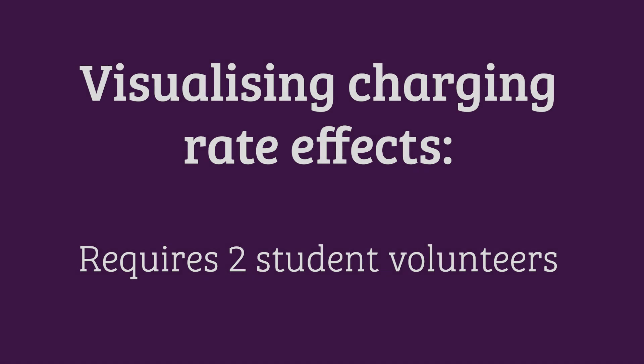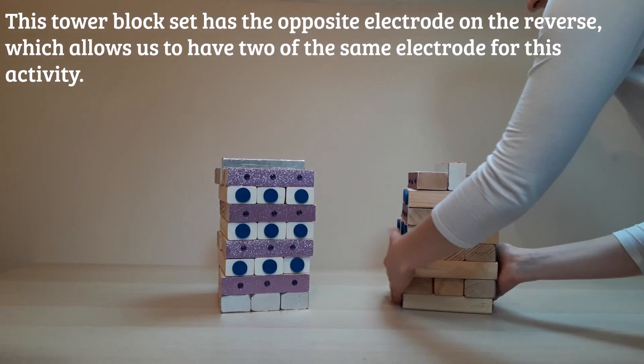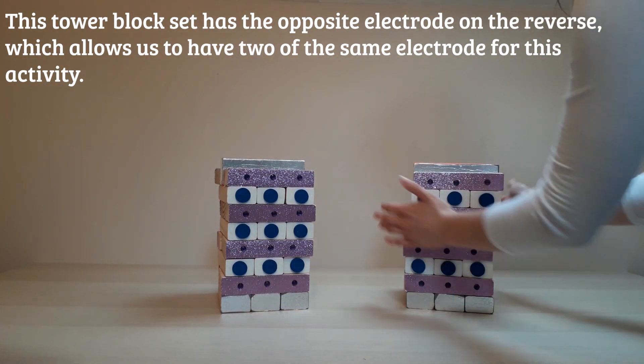The next demonstration is visualizing charging rate effects. Two student volunteers are required. We ask them to remove the lithium blocks as fast as they can. Our tower block sets have the opposite electrode on the reverse. This is so we can run this activity side by side with the two oxide electrodes.